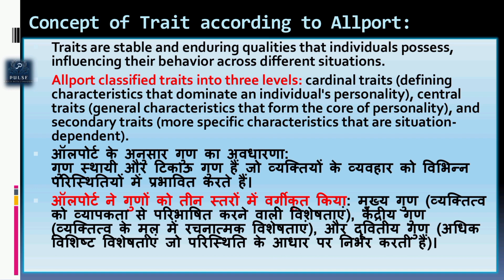Concept of Traits According to Allport. Traits are stable and enduring qualities that individuals possess, influencing their behavior across different situations. Allport classified traits into three levels: cardinal traits — defining characteristics that dominate an individual's personality; central traits — general characteristics that form the core of personality; and secondary traits — more specific characteristics that are situation-dependent.